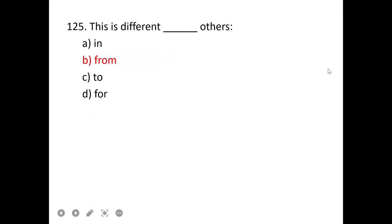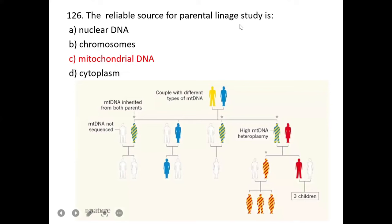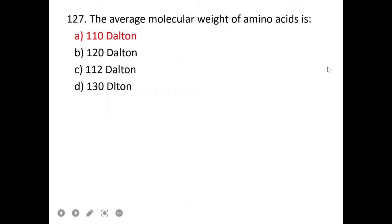Chromosomes become short and thick in which phase of cell cycle? Metaphase is the stage where chromosomes become short and thick, and this is the stage where we study chromosomes. C is correct. Chromosomes were discovered by Walther Fleming.